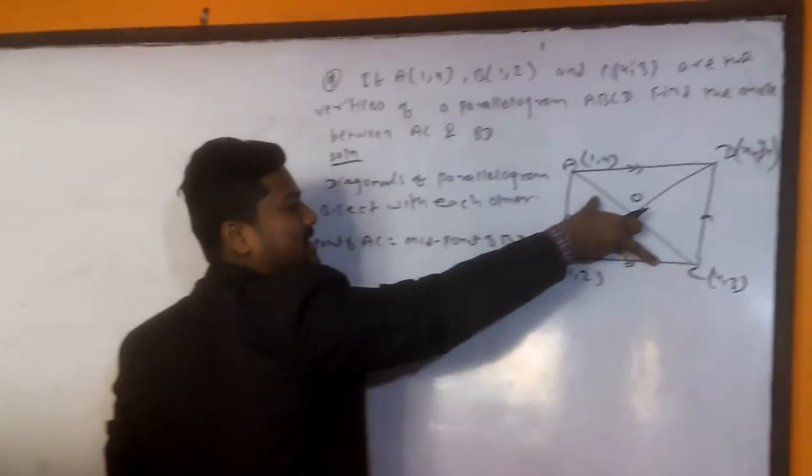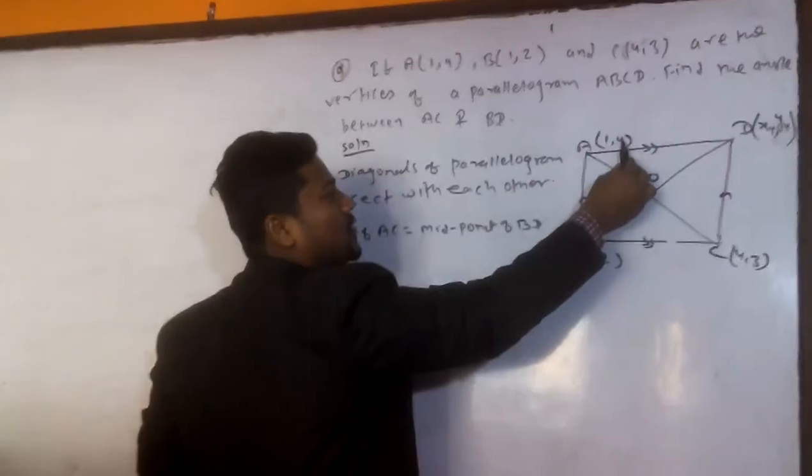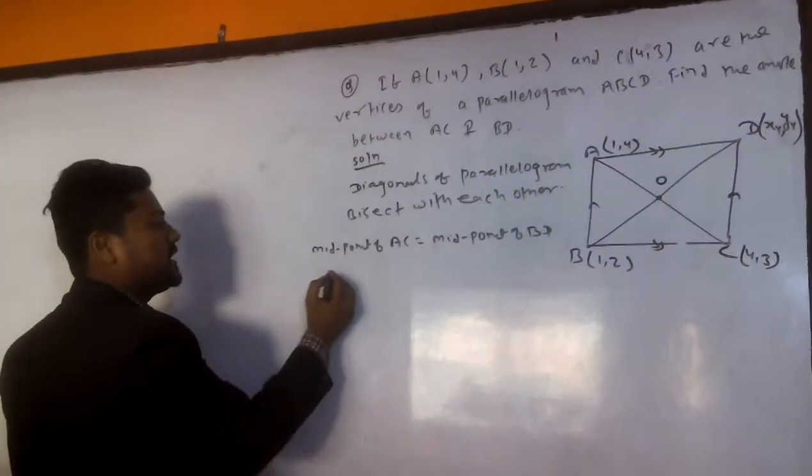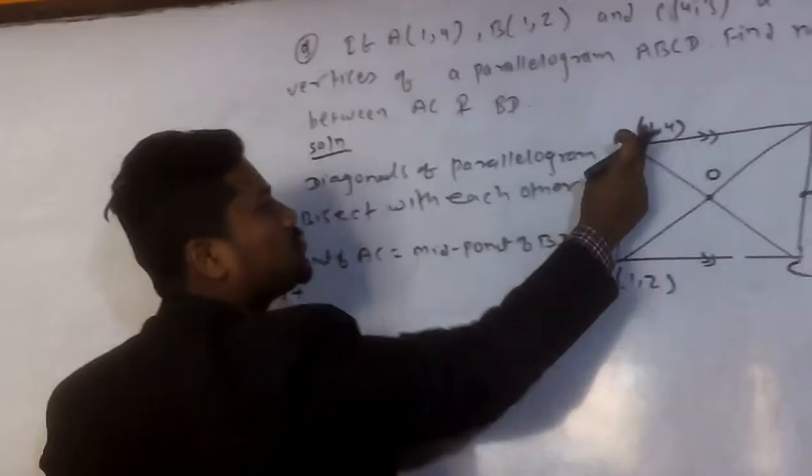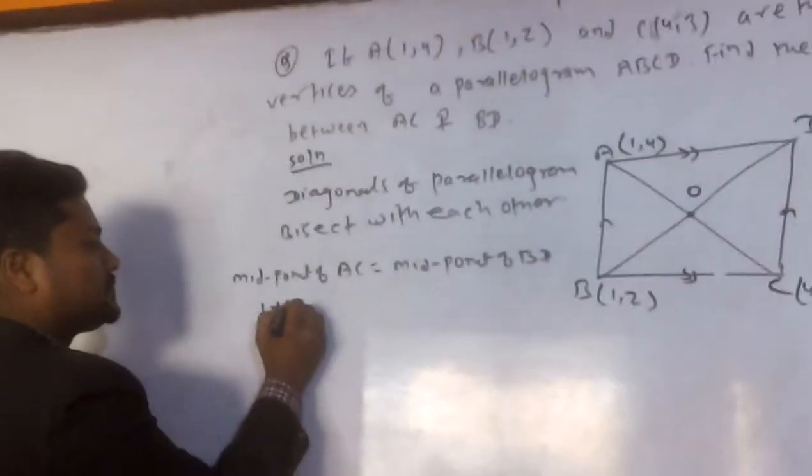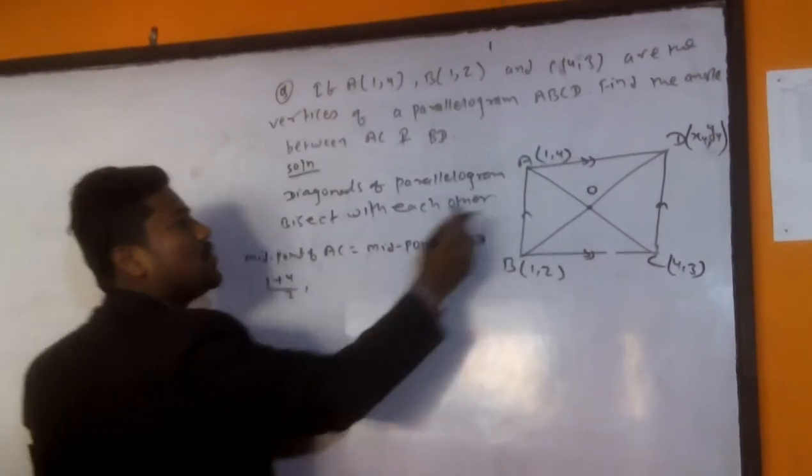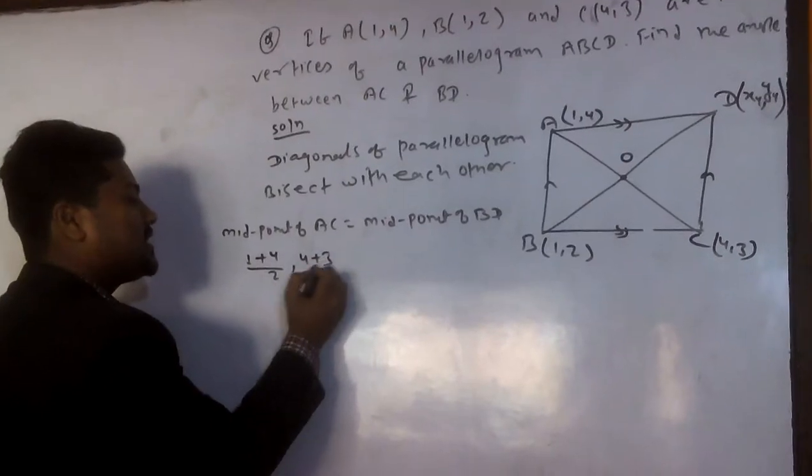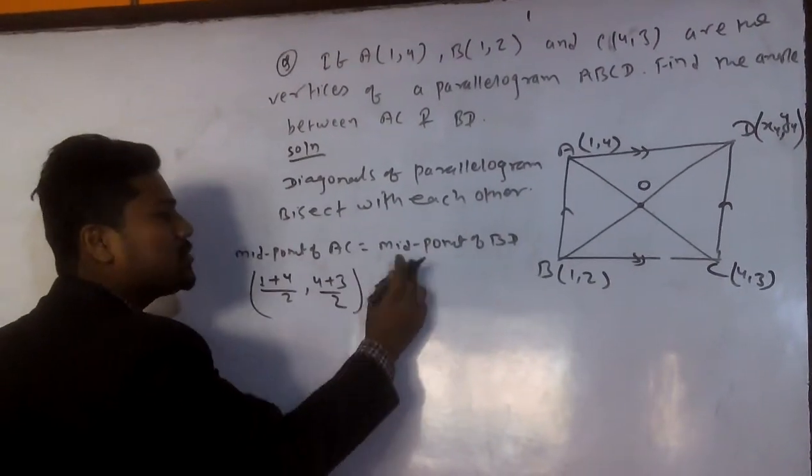So midpoint of AC. Here, diagonal AC given. So this is X1, Y1, X2, Y2. So midpoint formula, X1 means here 1, X1 plus X2. By 2 comma Y1, Y1 is 4, but here 4 plus 3, 4 plus 3 by 2.